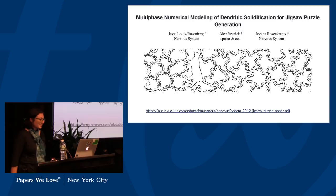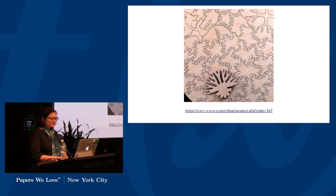The jigsaw puzzles we're going to look at today are a little bit different. Here's the full paper title, Multi-Phase Numerical Modeling of Dendritic Solidification for Jigsaw Puzzle Generation. The authors are Jesse Rosenberg, Alec Resnick, and Jessica Rosencrantz. Two of those three work at Nervous System, which is a place that actually sells this kind of thing. You can go to Nervous.com and find both the original paper as well as their stuff.